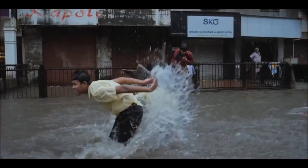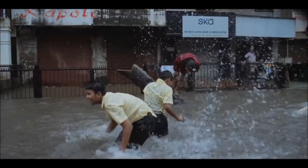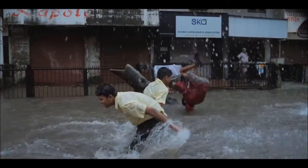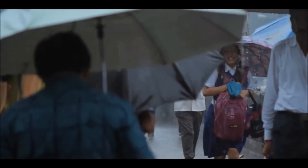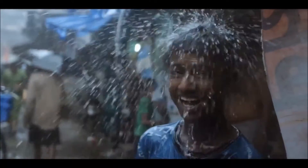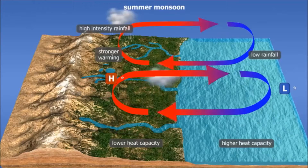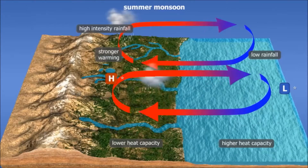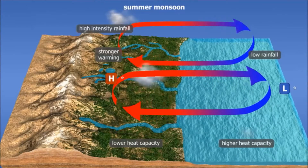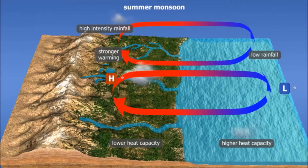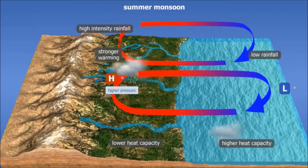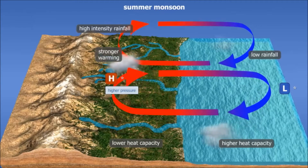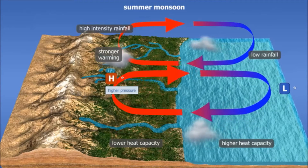When most people think of a monsoon, they think of a torrential downpour of rain, but a monsoon is actually a shift in the direction of air masses. During the summer, maritime equatorial and tropical air masses travel from the ocean onto land as the temperature rises.